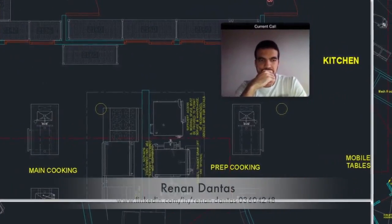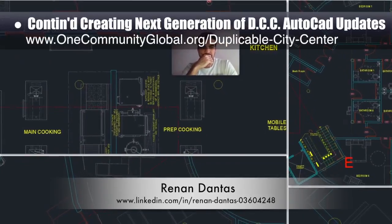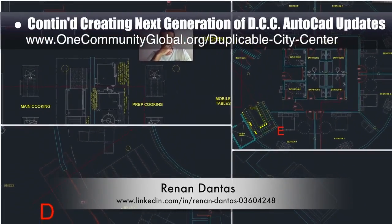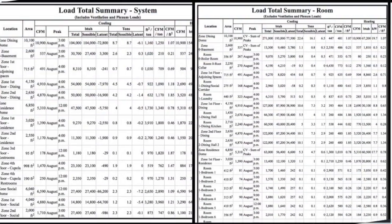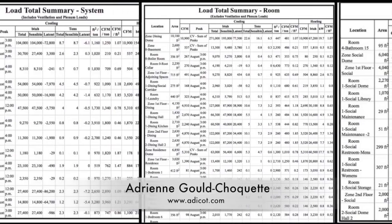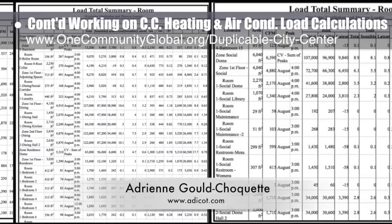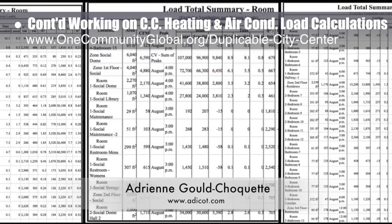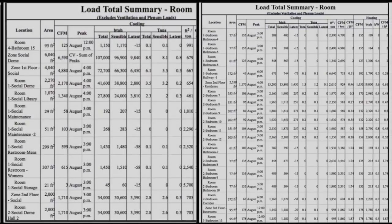Hannon Dantes, mechanical engineer, continued his 15th week working on the duplicable city center AutoCAD updates, focusing on adding more room and library details and finishing the kitchen area cleanup. Adrian Gould Choquette, mechanical engineer, finished her 16th week with the team, focusing on load calculations and projections for the city center heating and air conditioning infrastructure. We're now about 90% complete with these calculations.